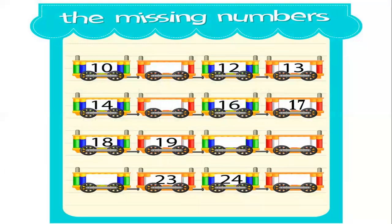See this? There is a train. In the train, the first box has the number 10, the second box number is missing, the third box has number 12, and the fourth box has number 13. You have to find which number is not here.